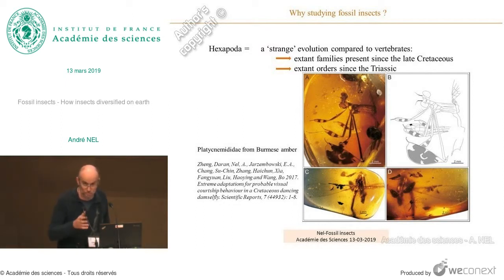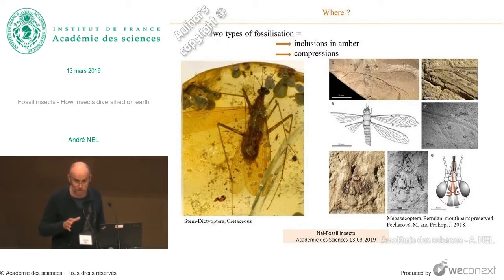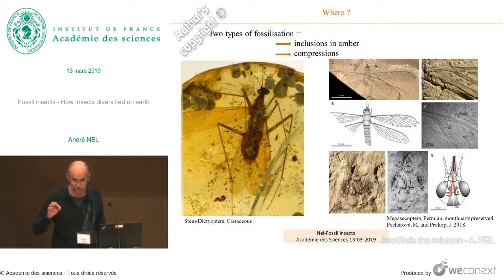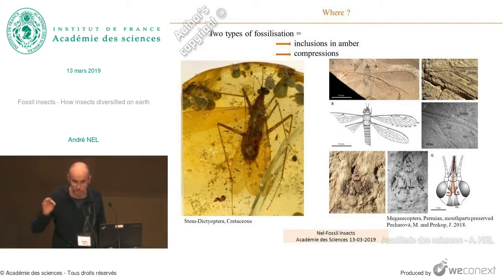So it is completely different, for example, from the mammals. We have two types of fossilization, but first we have to say that what we know of fossil insects, as with other fossils, is only a very small part of what has lived and existed in the past. So we make reconstructions, but they are probably very fragmentary. We miss the majority of the fossil taxa that have lived.